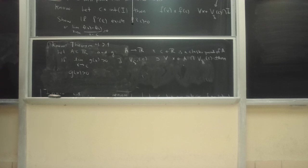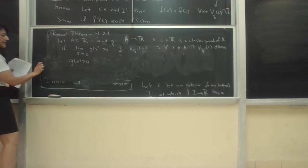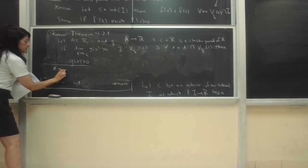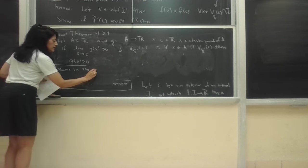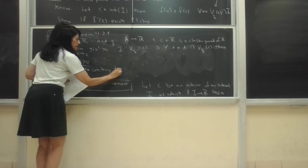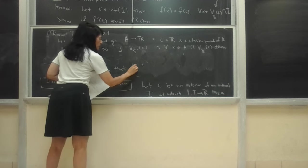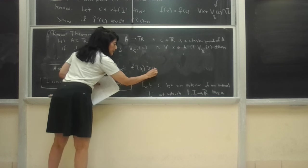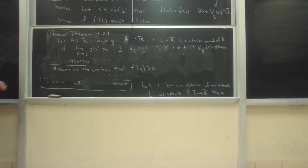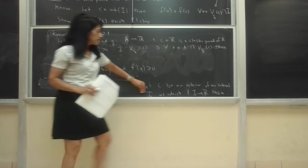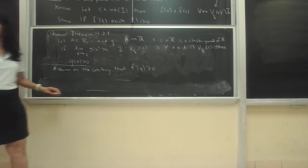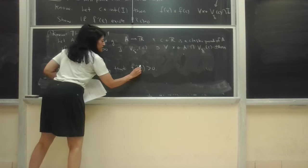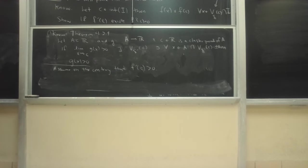So how am I going to use this? I'm going to use it by assuming on the contrary that f prime of c is not zero but bigger than zero — and I'm going to show that can't happen. My goal is to show f prime of c equals zero. So I assume on the contrary that f prime of c is greater than zero, then separately I'll assume it's less than zero, and from that I'll bracket it to exactly zero.